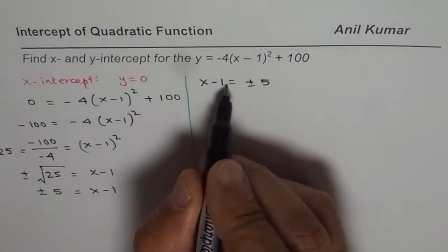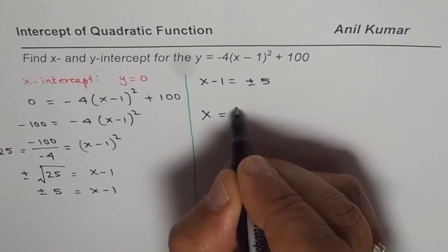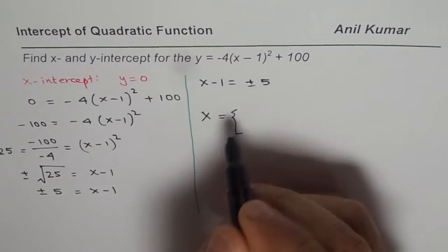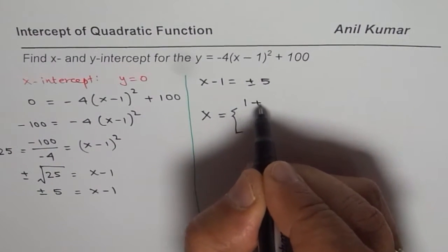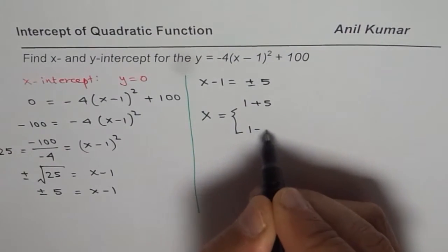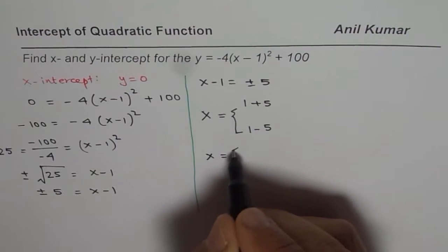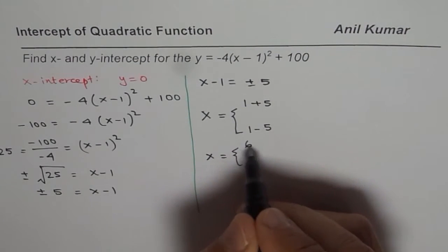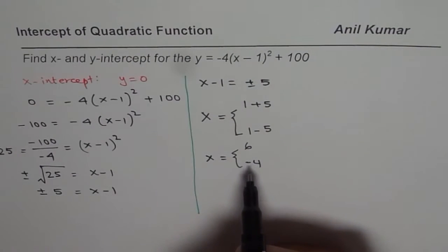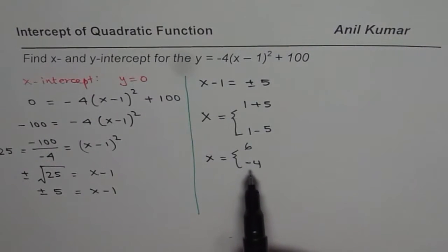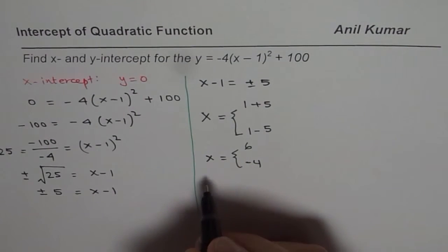Now we can solve for x and we indeed have two solutions. If I use plus 5, my solution is 1 plus 5; or I have a solution as 1 minus 5. So we get two solutions: x equals 6, and x equals minus 4. That means there are two x-intercepts for this particular function — one is at 6, the other one is at minus 4.